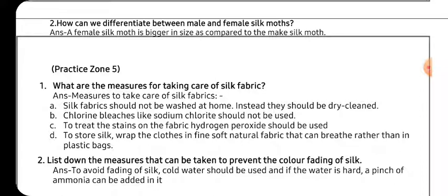Next is: what are the measures for taking care of silk fabric? One is that we should not wash it with hot water; instead we should wash it with cold water. If the water is hard and not fit for washing, we can add a pinch of ammonia in it, which helps us to wash it easily. In case of stains on the silk fabric, we can use hydrogen peroxide, which will remove the stains.